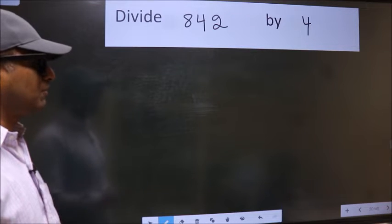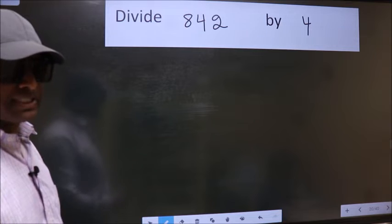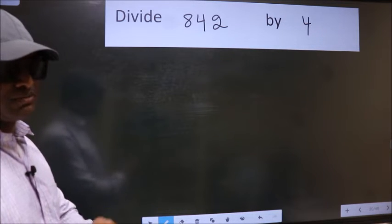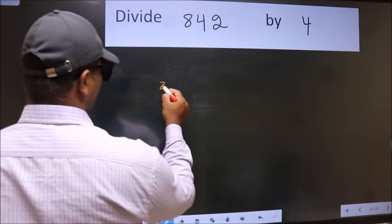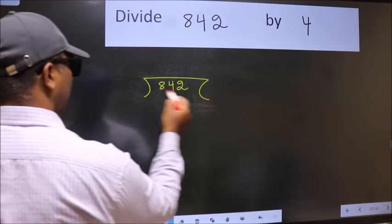Divide 8.42 by 4. While doing this division, many do this mistake. What is the mistake that they do? I will let you know. But before that, we should frame it in this way. 8.42 here, 4 here.